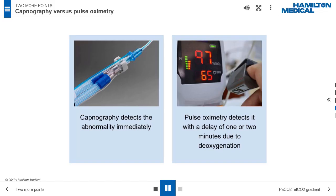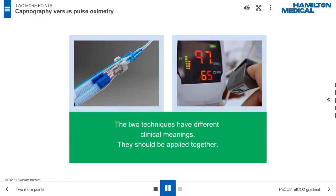When a sudden change in respiration occurs, such as apnea, capnography detects it immediately, while the consequent deoxygenation detected by pulse oximetry occurs one or two minutes later. Therefore, capnography and pulse oximetry measure different things and have different clinical meanings. Both monitoring techniques should be applied together to safeguard the patients and obtain the full clinical picture.